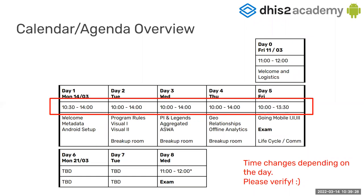Don't worry if I go fast now because there are specific sessions for each one of these topics. Day four, you will see everything related to maps, relationships, and the new features of the Android app. This academy targets version 2.5 of the app, and this version is the first one with analytics — with tables and charts — so you will see that on Thursday.